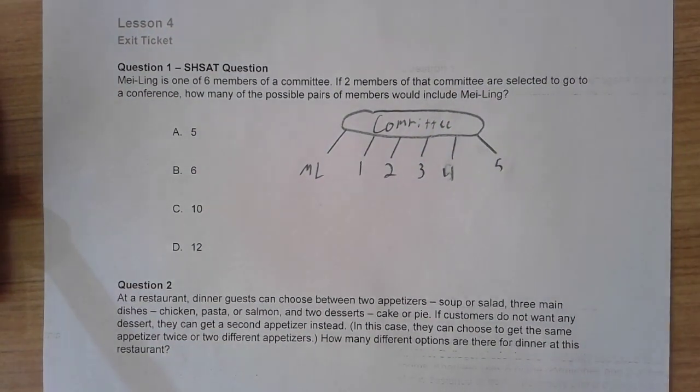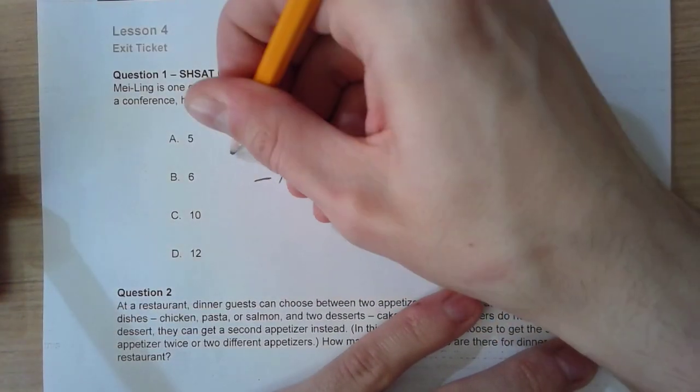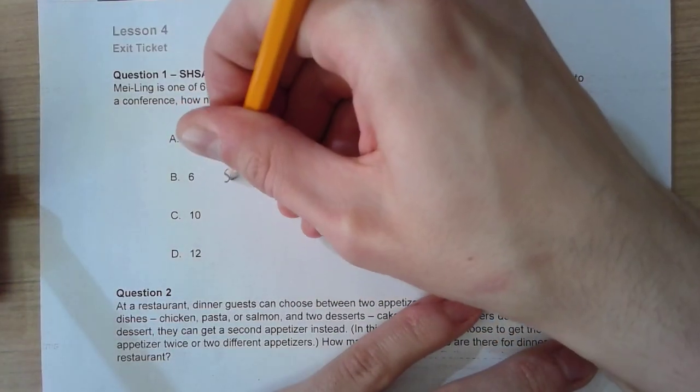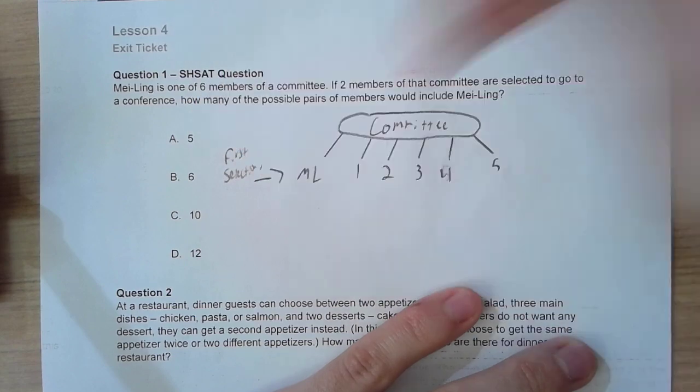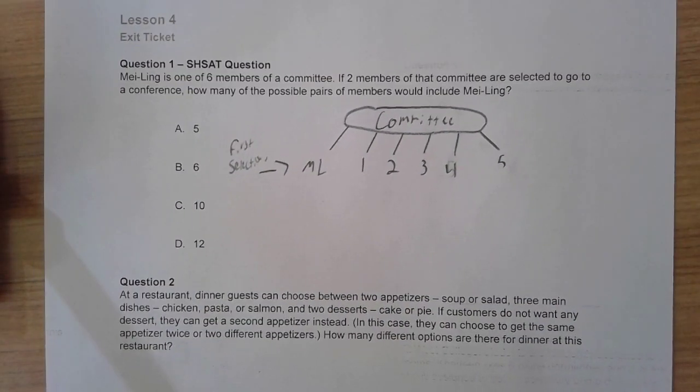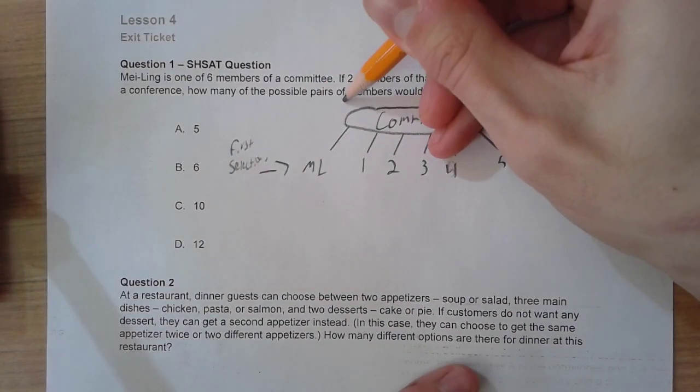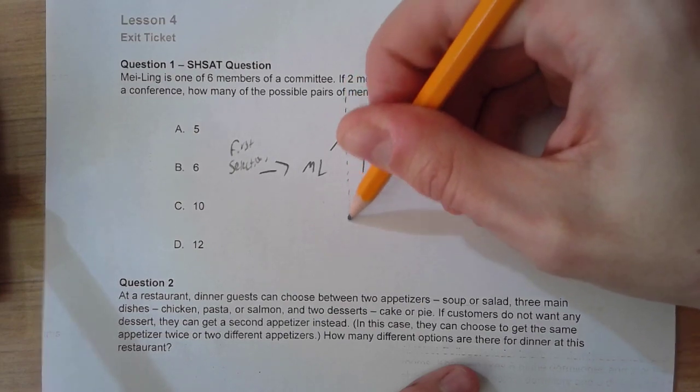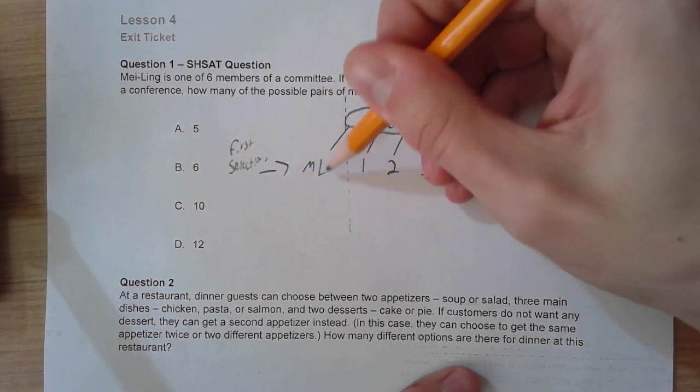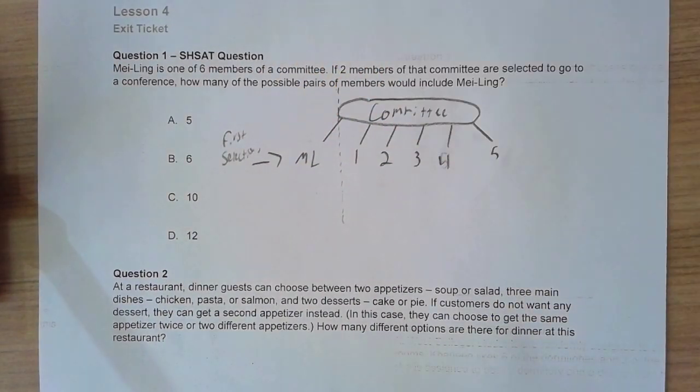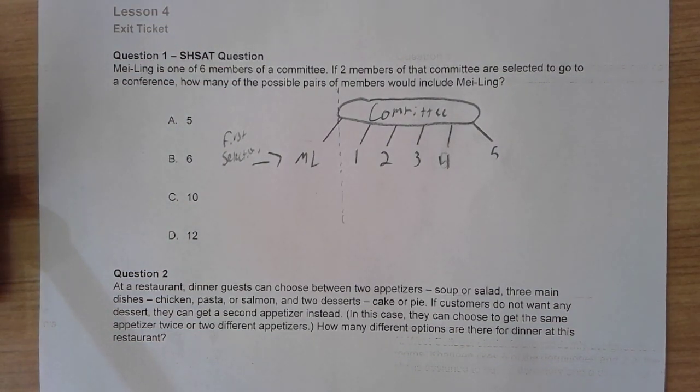From this list, this is our first selection. An important thing we should realize right away is all of our favorable outcomes are going to come from this branch of our tree. If Mei Ling is selected, we know right away that anybody else that she is selected with is going to be in that list of favorable outcomes because Mei Ling is in the group.